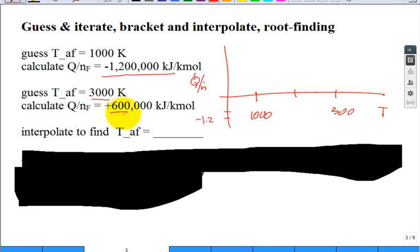It came in positive. It went to the other side. Hey, that's great. I bracketed it. Somewhere in between is the root. And so the Q dot divided by N dot, when the temperature is 3,000, comes in at positive 600,000 or 0.6 million, keeping it on the same scale. Oh, it comes in right about here, 0.6, right there. See, 0.63,000. Here, negative 1.2 at 1,000.